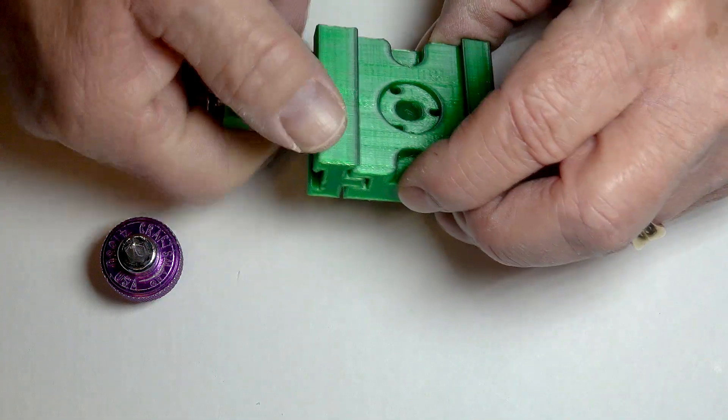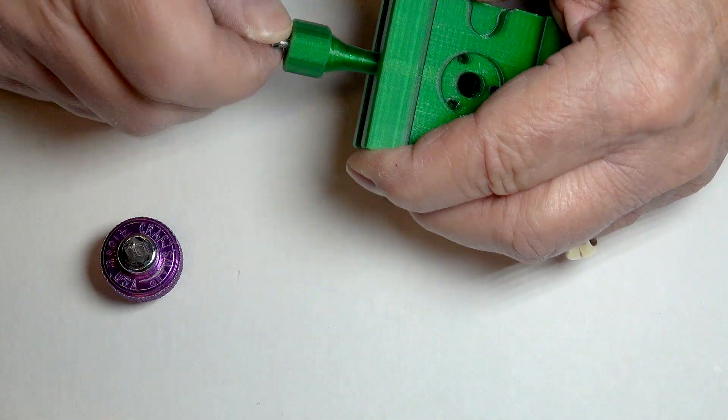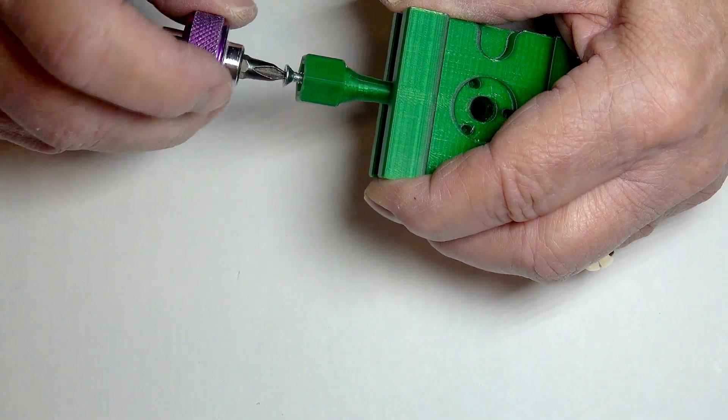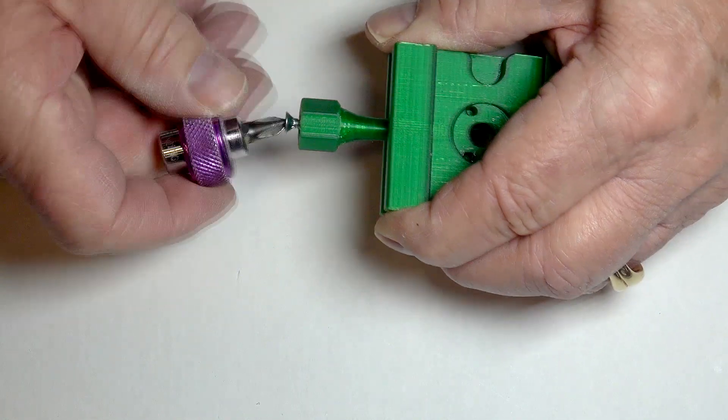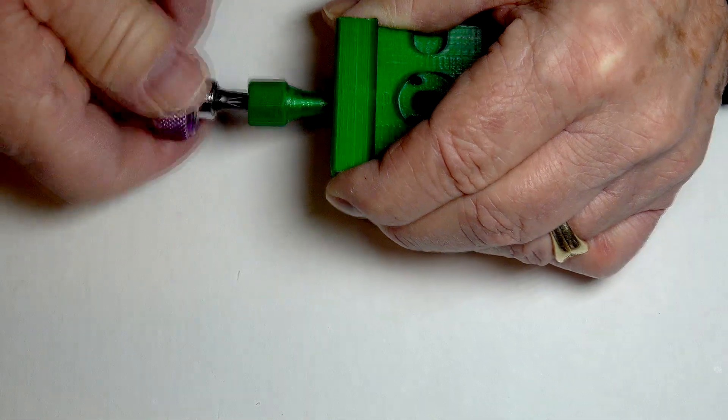Position the jaw into the base and use a screwdriver to screw the machine screw into the hole in the base until the screw shows through the hole for the t-nut in the base. Back the screw out until it is just flush with the edge of the t-nut hole.